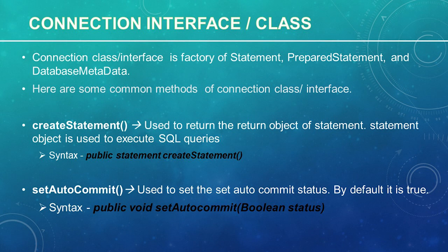Here are some common methods of the Connection interface. The first method is createStatement(). This method is used to create a Statement object, which is used to execute SQL queries. Its syntax is: public Statement createStatement(). There is also an overloaded version: public Statement createStatement(int resultSetType, int resultSetConcurrency), which creates a Statement object and generates a ResultSet object with the given type and concurrency.